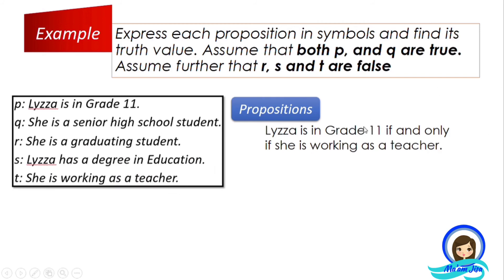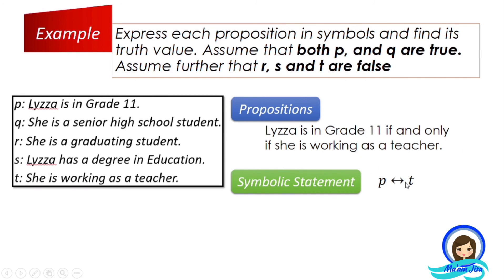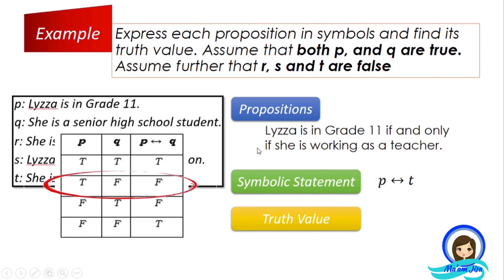Second example: Liza is in grade 11 if and only if she is working as a teacher — written as P if and only if T. Since P is true and T is false, one of the propositions is false. Therefore, the biconditional statement — Liza is in grade 11 if and only if she is working as a teacher — is false.